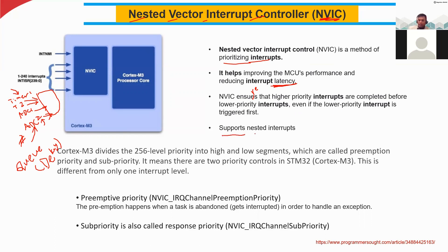NVIC also supports nested interrupts — nested means one inside another. Just like in C language where we have a nested if, with a parent if and a child if inside it, interrupts can be nested similarly. So inside ADC two, you can have a sub-interrupt, and inside that another sub-interrupt. NVIC supports these nested interrupts.